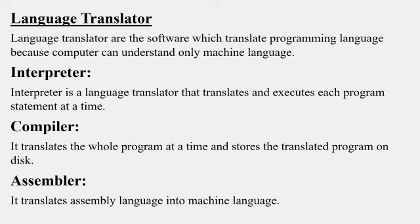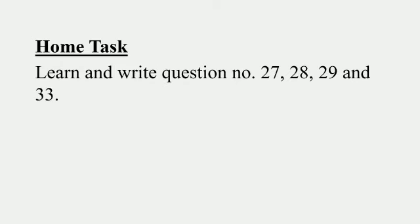The compiler works opposite to the interpreter — it reads the whole program first, shows all errors at once, you resolve them all, and then the program runs and is stored on disk. An assembler translates assembly language into machine language only; it does not support any other kind of language. Comparing interpreter and compiler: the compiler is fast, the interpreter is slow, but the interpreter is more reliable. Most modern high level languages use a compiler. Your home task is to learn and write questions number 27, 28, 29, and 33.